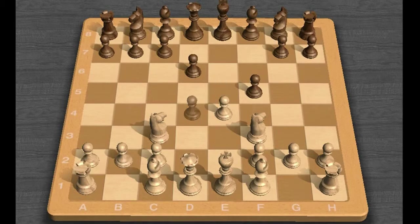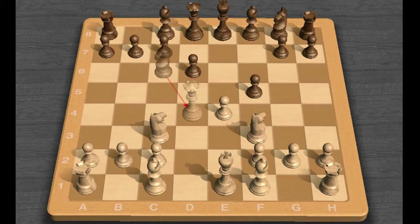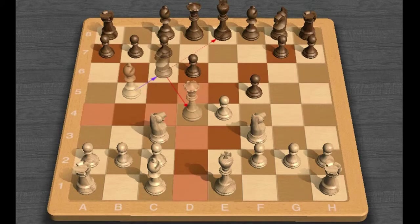But I think White also gets an edge with Queen captures D4, Knight C6, and then Bishop B5, pinning that Knight and maintaining the Queen's centralized position.